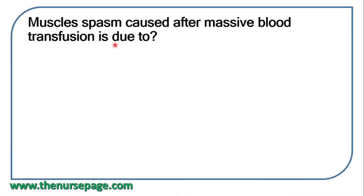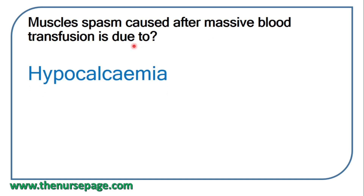Next question: muscle spasm caused after massive blood transfusion is due to hypocalcemia. The preservative citrate added to blood utilizes the available calcium in the blood, leading to hypocalcemia.